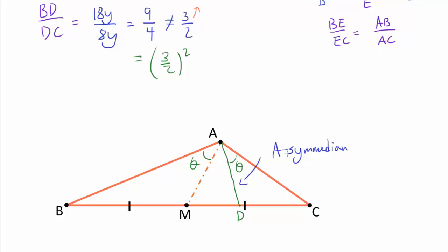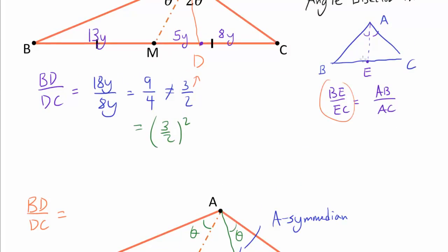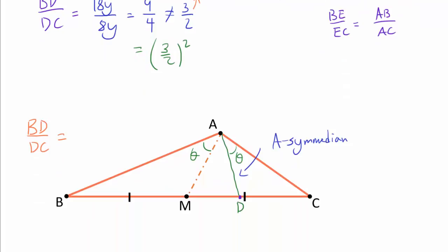And of course, you can define BC-median and CC-median in an identical way. But what can be proven is that if AD is the AC-median, BD over DC, so it's like our angle bisector case. In angle bisector, BE over EC was AB over AC. But it turns out for C-median, BD over DC turns out to be AB over AC squared. And this is one of the many fascinating properties that AC-median has. But we will actually prove this particular one right now.